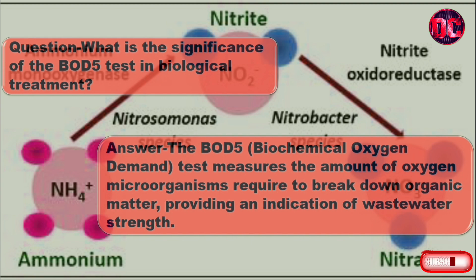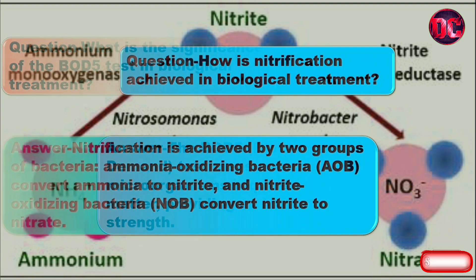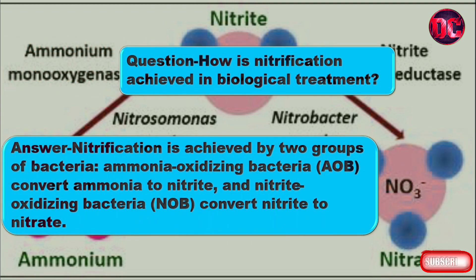Question: How is nitrification achieved in biological treatment? Answer: Nitrification is achieved by two groups of bacteria: ammonia oxidizing bacteria (AOB) convert ammonia to nitrite, and nitrite oxidizing bacteria (NOB) convert nitrite to nitrate.